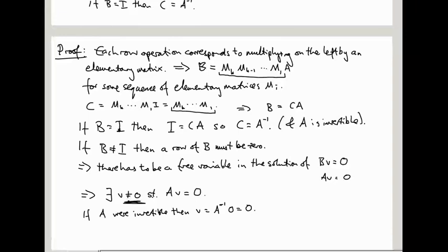And that contradicts the fact that V is not zero. All right, so the point here is that because there's a free variable, there's like a whole line's worth of solutions, at least, right? Not just a single point. Okay, so this shows, this bit shows that if B is not the identity, then A is not invertible.